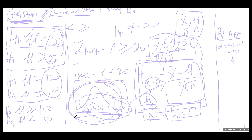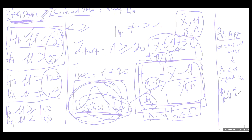To define the p-value approach, you compare the p-value you obtain from the table to the alpha value. The caveat is that if the p-value is less than the significance level, which is the alpha, you reject the null hypothesis. But if the p-value is greater than the alpha, we fail to reject.